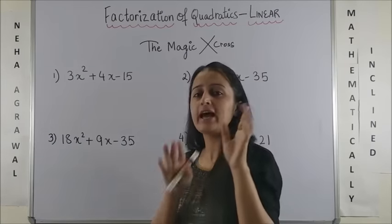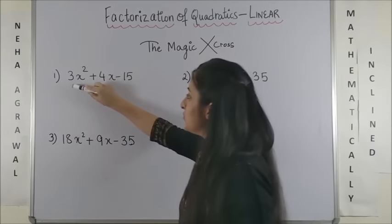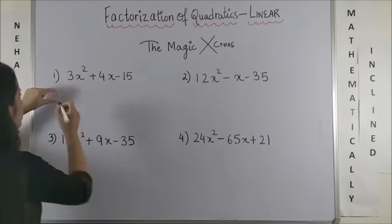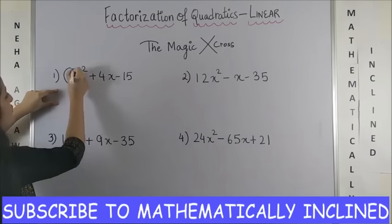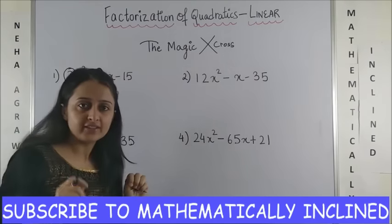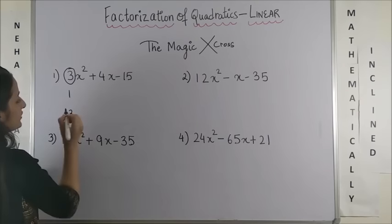So, let's try the technique and you would trust me solve it under 5 seconds. When you come across a question, what we are going to do is, first of all, look at the coefficient of x square and write it into the factors. Any two factors. Here, it's very simple. Let's say 1 and 3.